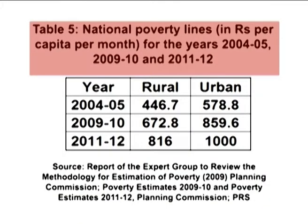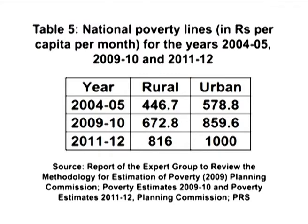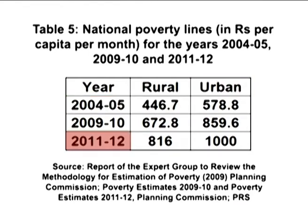Table 5 outlines the poverty lines computed using the Tendulkar methodology for the years 2004-05, 2009-10, and 2011-12. From the table shown on the screen, we observe that for the year 2004-05, a person having income less than rupees 446.68 per month in rural areas and rupees 578.80 per month in urban areas falls below the poverty line. In 2011-12, this income was raised to rupees 816 per month for rural areas and rupees 1000 per month for urban areas.